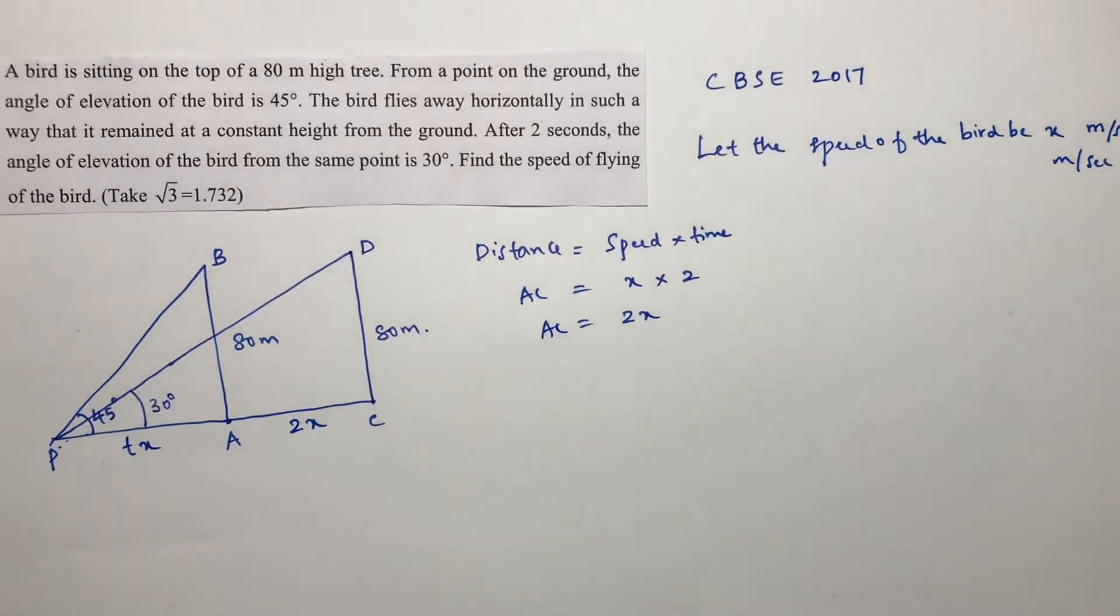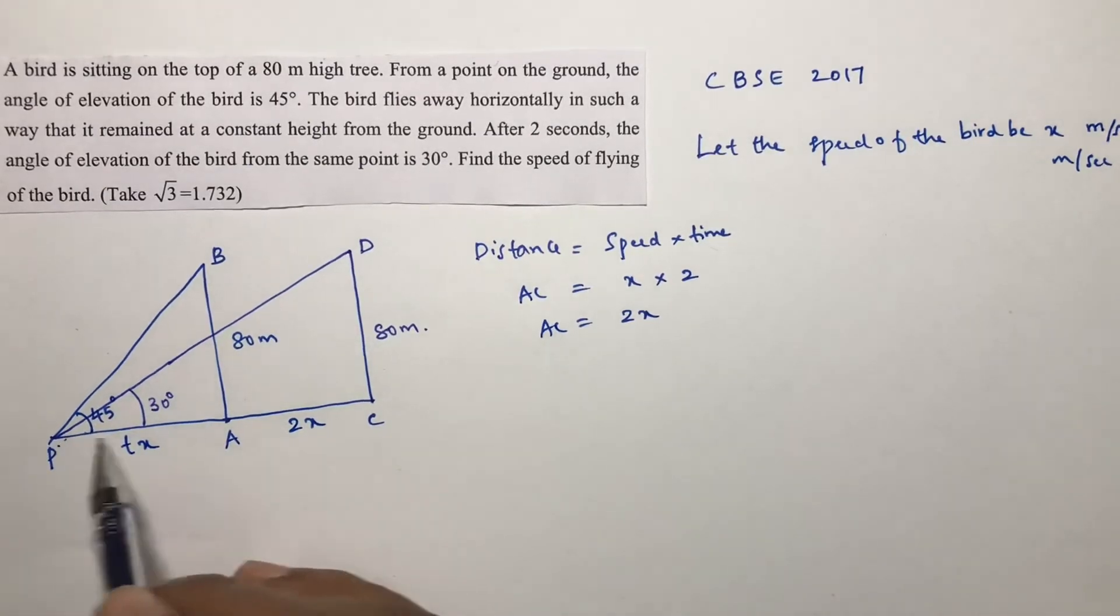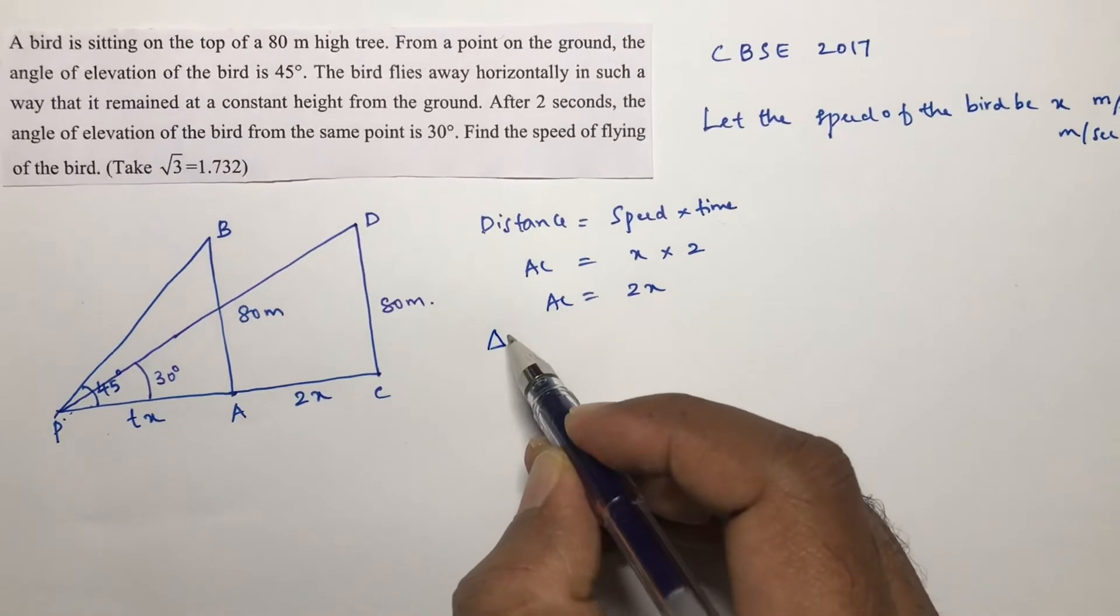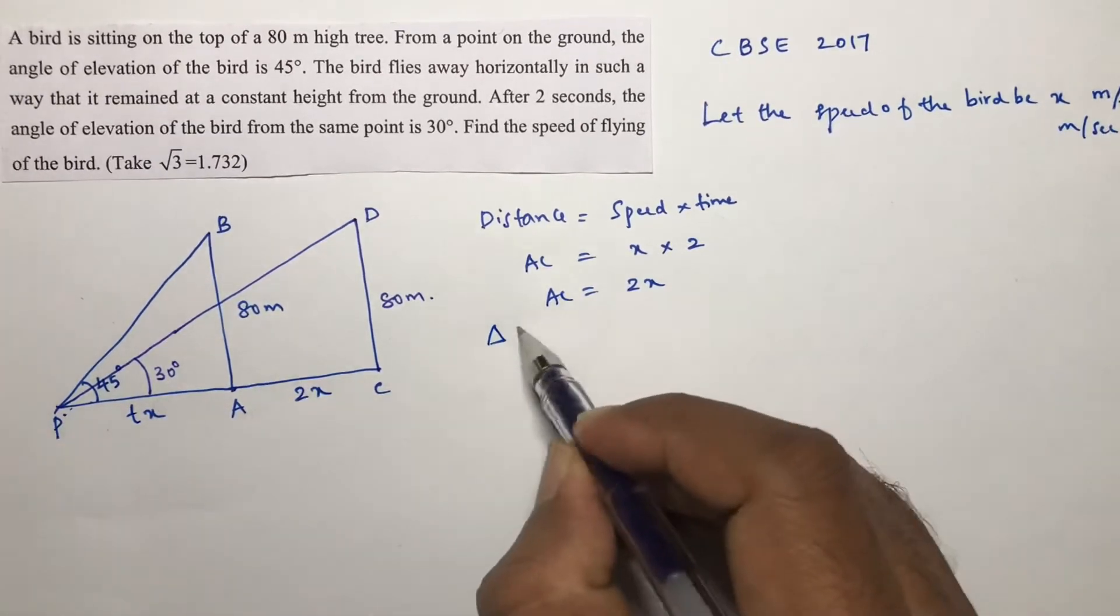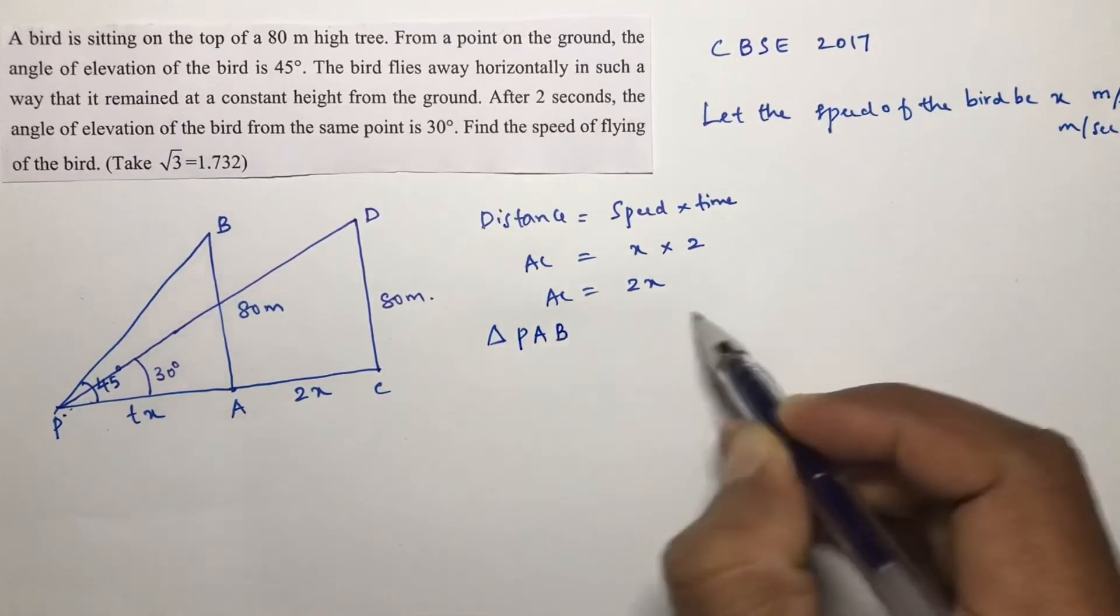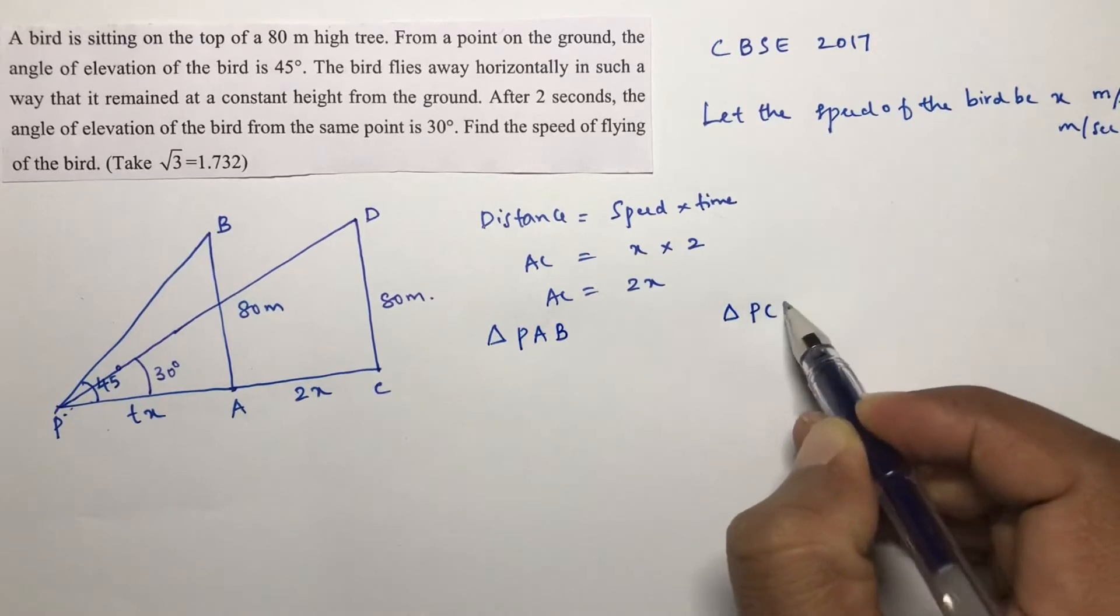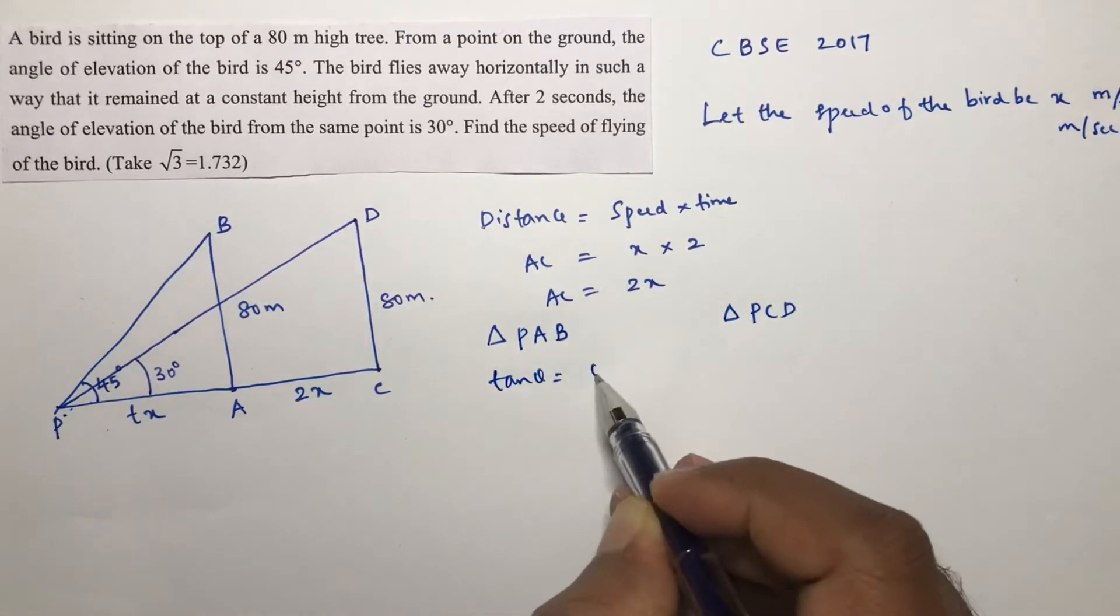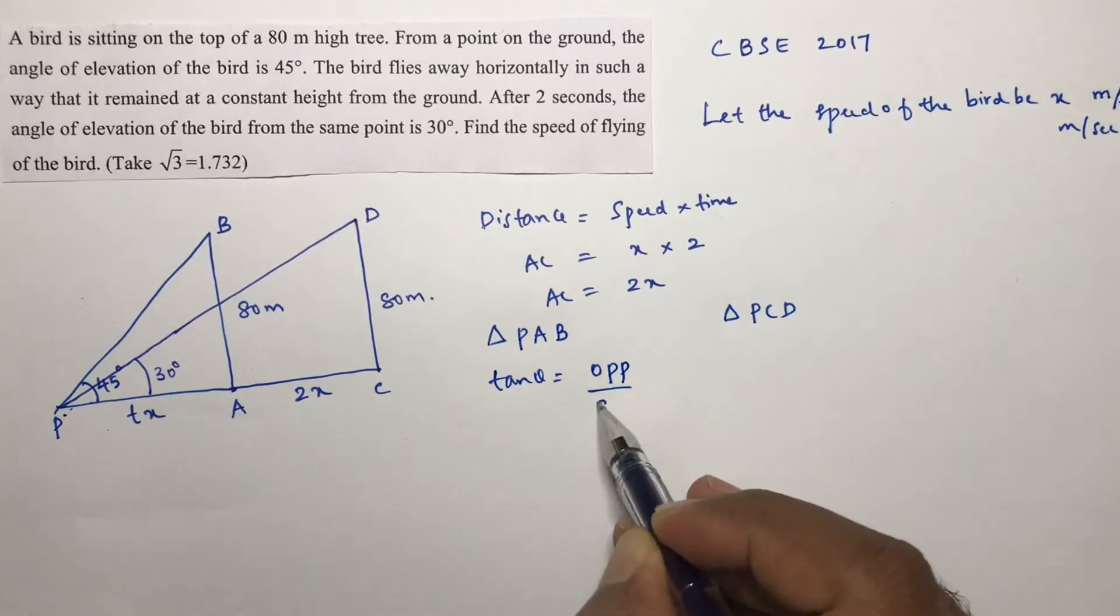Here we don't know time and we don't know speed, so we'll consider it as tx. Clearly here there are two right angle triangles. First one is triangle PAB.